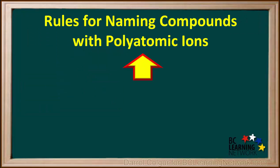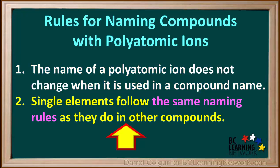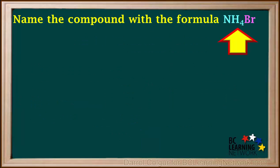Now that we've shown you how to find the polyatomic ions in formulas, let's look at the rules for naming compounds with polyatomic ions. The first rule is: the name of a polyatomic ion does not change in any way when it is used in a compound name — its name is the same in a compound as it is on an ion table. The second rule is: single elements that are not in polyatomic ions follow the same rules as they do in other compounds. The best way to learn how to name compounds with polyatomic ions is to see several examples.